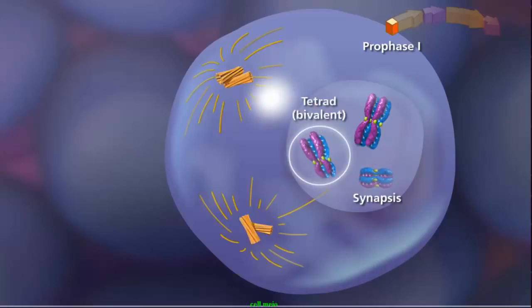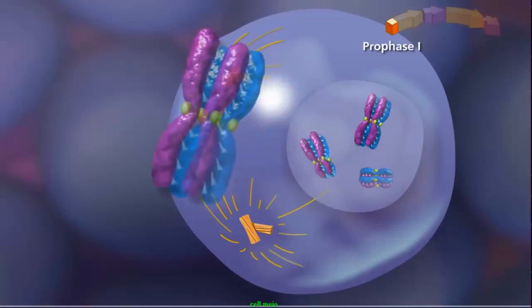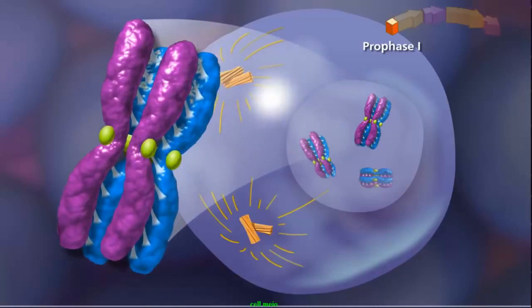This forms a tetrad or bivalent. The homologous chromosomes share similar, but not necessarily identical, genes. Once this structure is formed, the second event, called crossing over, can occur.